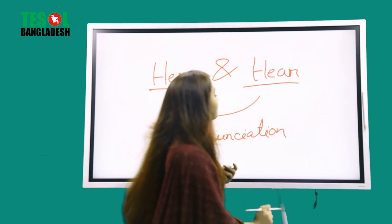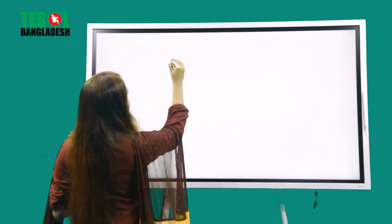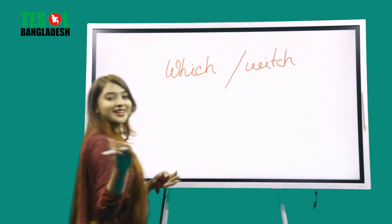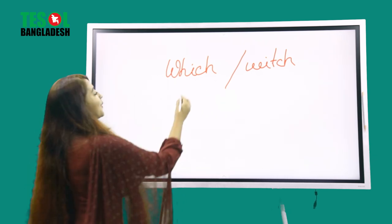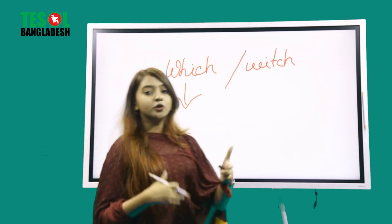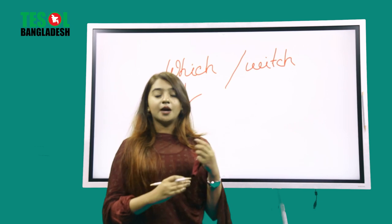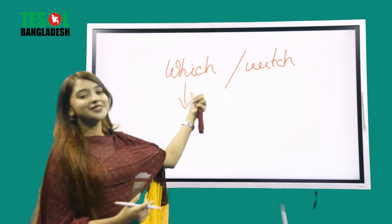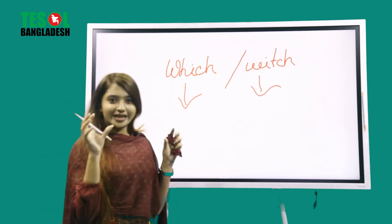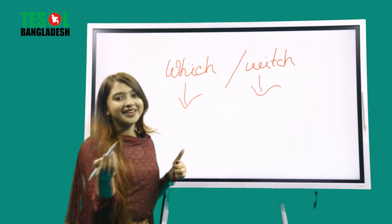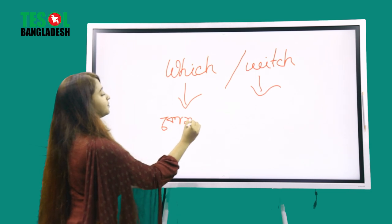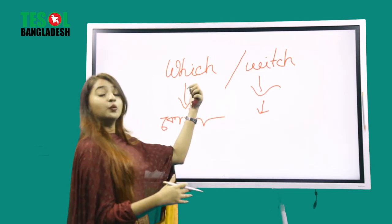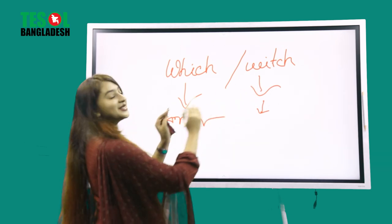And the last example — this is the funniest — 'witch' and 'which'. When we pronounce these two words, we don't hear a 'W' sound; we hear a 'W' sound like: what, where, when, which. So the pronunciation is kind of the same for both. This 'witch' means the scary woman, and 'which' means which one — like choosing between options. The pronunciation is kinda same, like 'witch' and 'which', but the meaning is totally different.